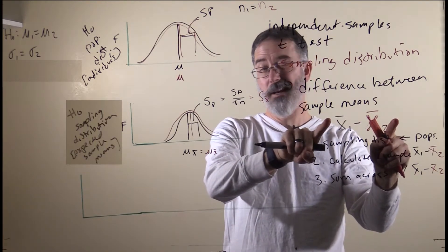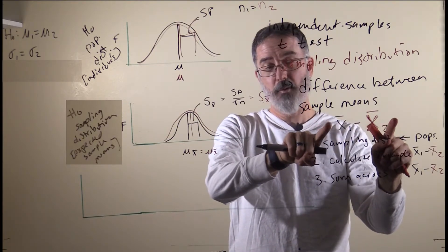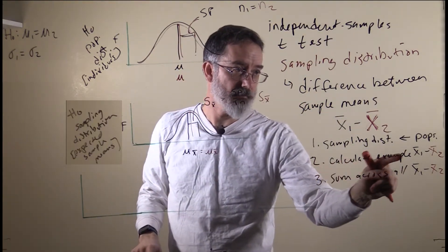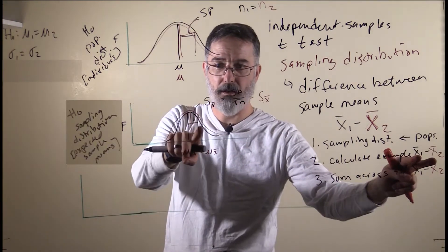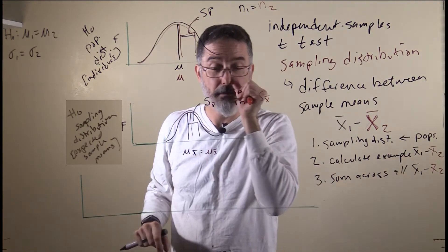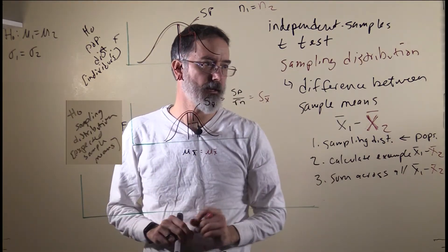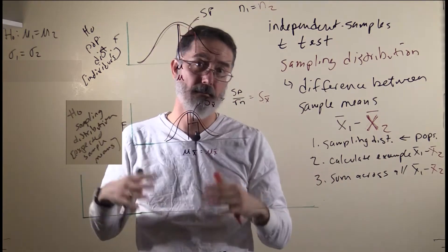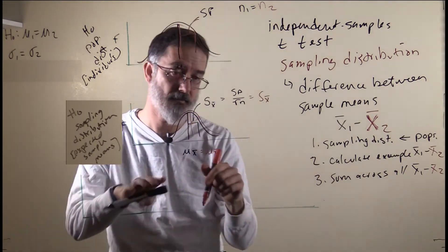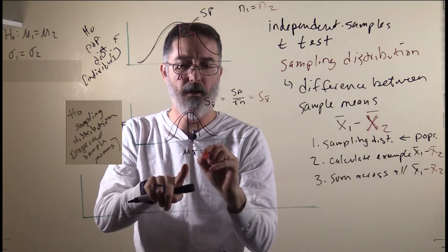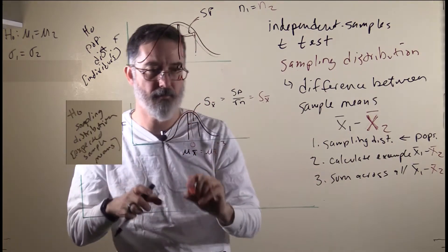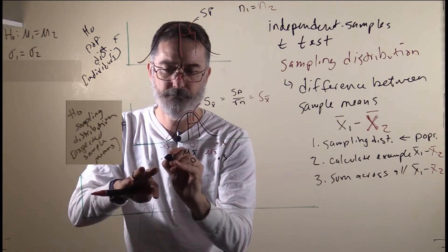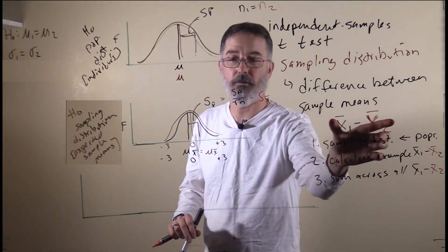We want to see how likely — really how unlikely — that big of a difference in sample means is if the null hypothesis is true. So the next step is to calculate some example differences between the means you would get from these two distributions. Since we do not know the scale here, just for this illustration we are going to do a z-score transformation. The mean of these distributions is going to be zero, the standard deviation will be one, and on the edges it would be about plus or minus three.